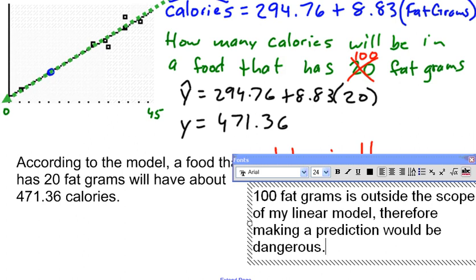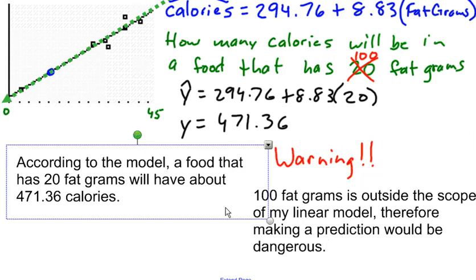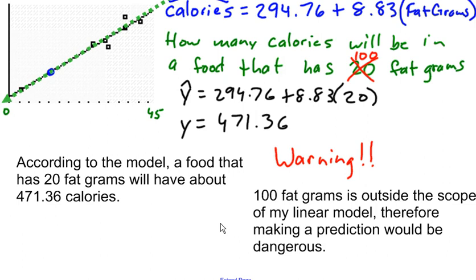Now, you could go ahead and make that prediction. If I plug 100 into my formula, I would end up getting 294.76 plus 8.83 times 100 is 1,000, ends up being 1,177.76.